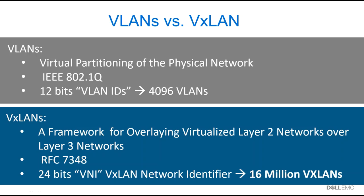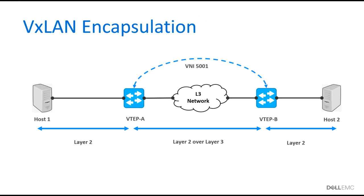VXLAN is more of a framework for a new concept called overlay networking, which allows us to send Layer 2 traffic over Layer 3 networks in the middle. VXLANs are defined by RFC 7348, and in the VXLAN headers we have the VNI — the VXLAN Network Identifier — which is 24 bits, giving the possibility of up to 16 million VLANs.